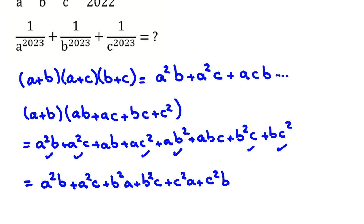Counting the ABC terms: from multiplying A we get one ABC, and there are two ABC terms total. So we write plus 2ABC. You should memorize this identity — we need it for solving this problem.